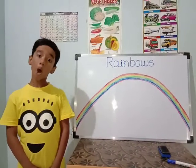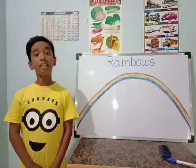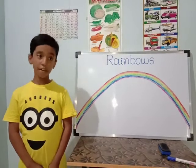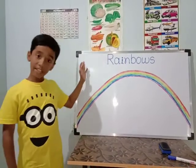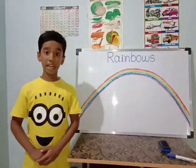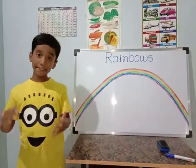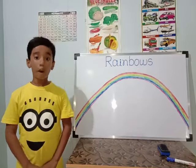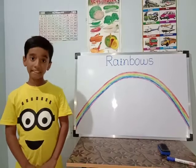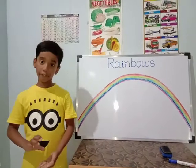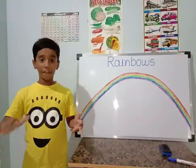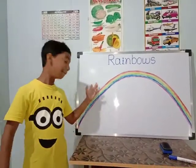I will tell you how a rainbow is formed. When the rays of the sunlight enter the water droplets, it reflects and forms the rainbow.